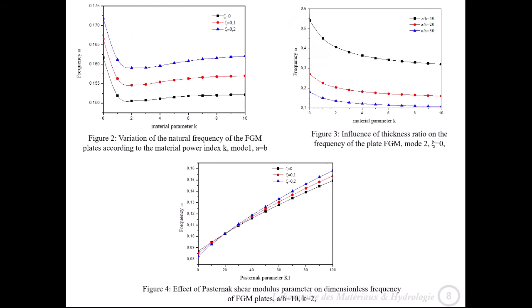From this figure we can see easily that the increase of porosity parameters zeta and Pasternak parameters lead to increase the natural frequency while the increase of slenderness ratio a/h lead to decrease the natural frequency.